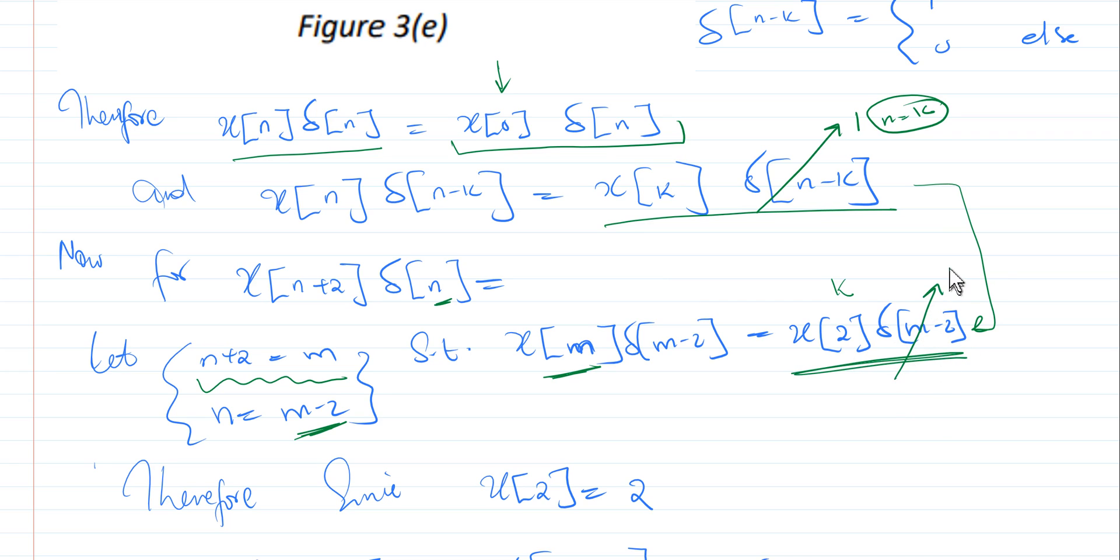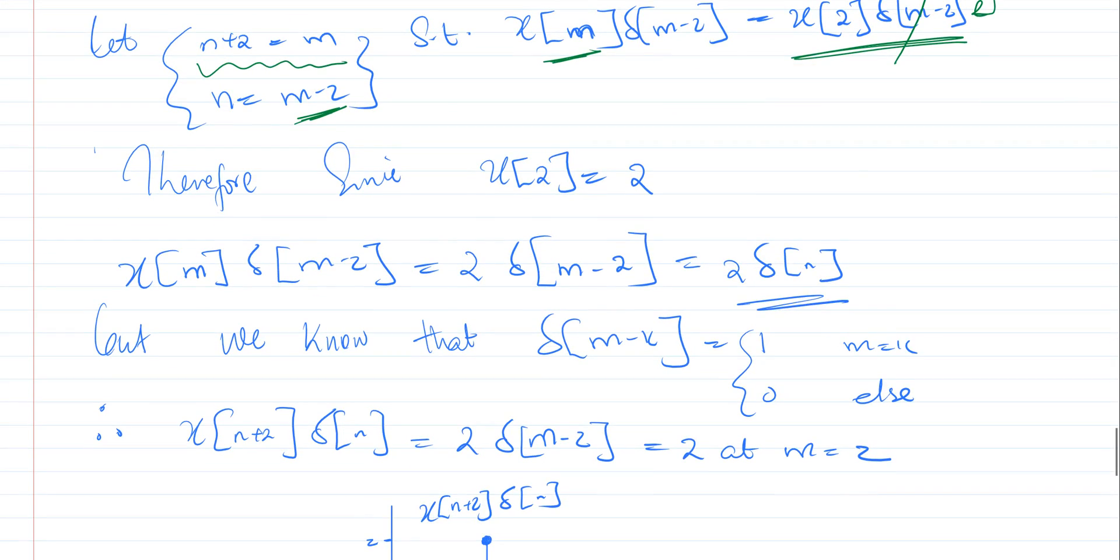And again, we know that this will give us a 1 when m is equals to 2, because we require this value here, the bracket, to be equivalent to 0. So we are saying that it will give us a 1, and we are only going to be left with the value of x of 2. So what are we saying therefore? That x of 2, we can check from our diagram here.